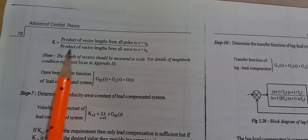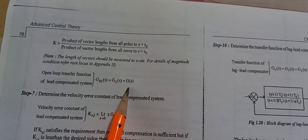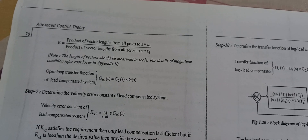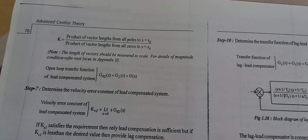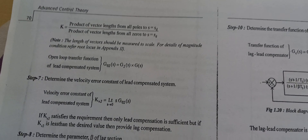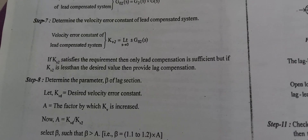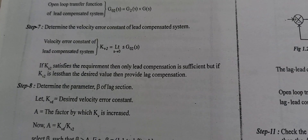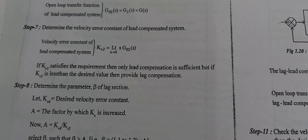What we need is the open loop transfer function G(s). If you have a complete term, you can use G(s). The transfer function gives us the velocity error constant. We have a desired velocity error constant that must be satisfied.